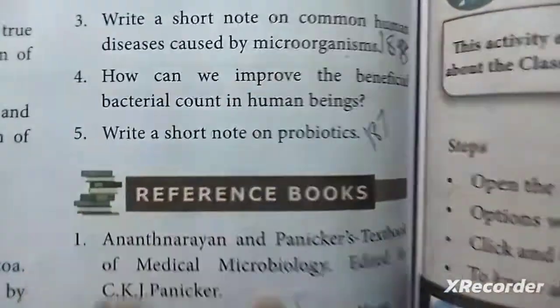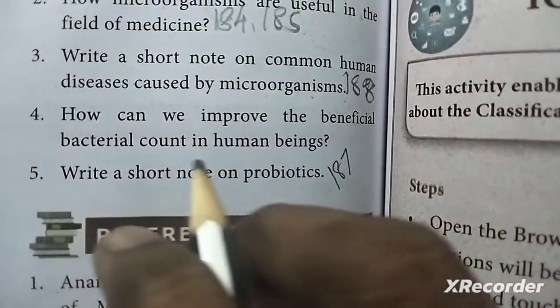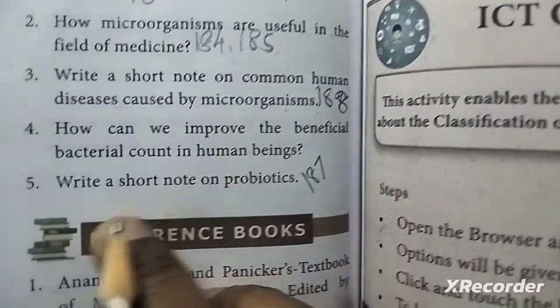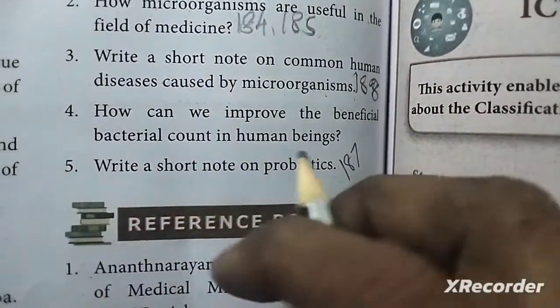Third question: write a short note on common human diseases caused by microorganisms - page 188. You will see the table in the textbook with diseases listed. Fourth question: how can we improve the beneficial bacterial count in human beings?